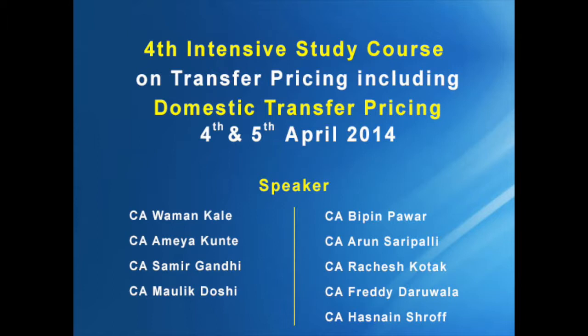Form 3CEB is divided into two main parts: the report and the annexure. The annexure has three parts — Part A, Part B, and Part C. Part A talks about very general information about the company like PAN. Part B talks about international transactions. Part C, which was introduced last year, talks about specified domestic transactions or domestic transfer pricing.